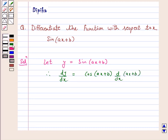So this equals cos(ax+b) times a. Therefore, the answer for the above question is a·cos(ax+b).